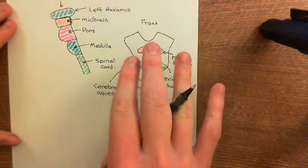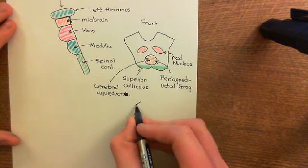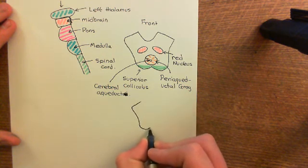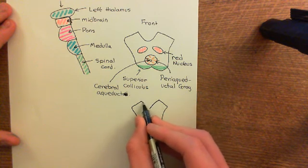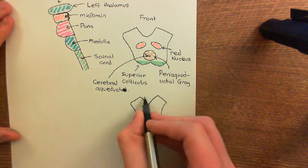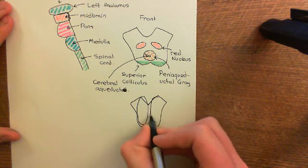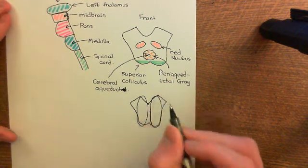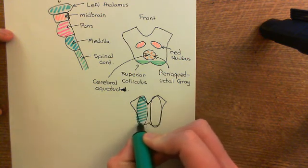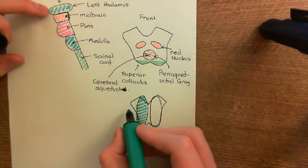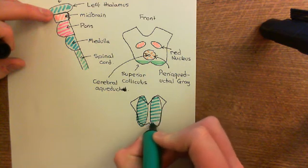Now the thalami are going to be sitting on top of the midbrain, so I'm going to show the thalami sitting on top of the midbrain. Here are the superior colliculi, here is the right cerebral peduncle, the left cerebral peduncle. Sitting on top of the left side of the midbrain you have the left thalamus, and sitting on top of the right side of the midbrain you will have the right thalamus. In this picture where we're seeing it from the side, all we're seeing is the side of the midbrain and we're seeing the left thalamus. We can't see the right thalamus because it's behind the left thalamus.